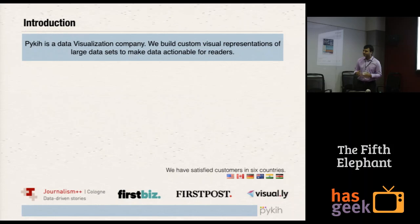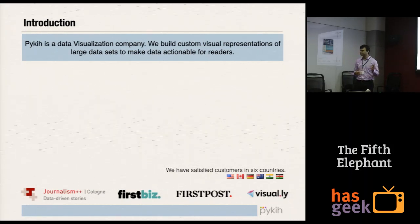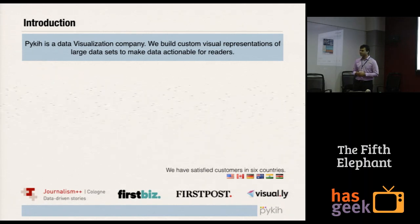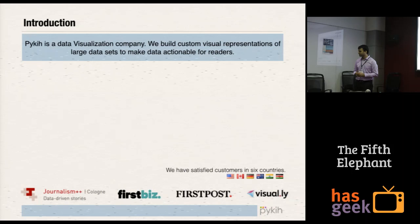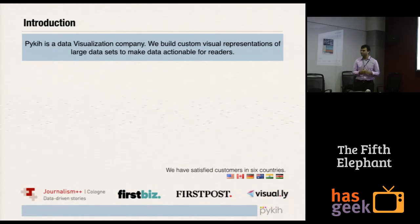We have clients in six countries. Some of the clients you might recognize include FirstPost and FirstBiz — they are part of the Network18 group. We are partnered with Visually, a very famous data visualization company in the US. And Journalism++ Press Color — they are the guys who build Datawrapper, so we work very closely with them too.